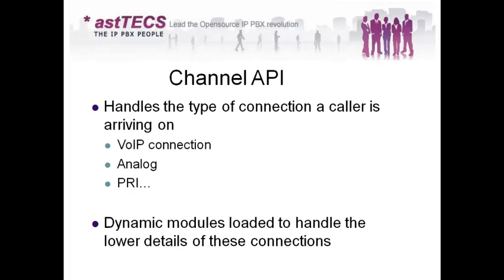Now looking at the Channel API: this is the one which handles the types of connections a caller is arriving on. For example, an incoming call may come through a SIP trunk registered with a SIP provider, through an analog FXO landline, through a PRI, or through GSM. All these different types of connections are handled by the Channel API. For example, if it is a PRI call, when the incoming call lands it goes to the chan_dahdi configuration file, which is specifically for PRI, and there it is defined which part of the dial plan context the call goes to.